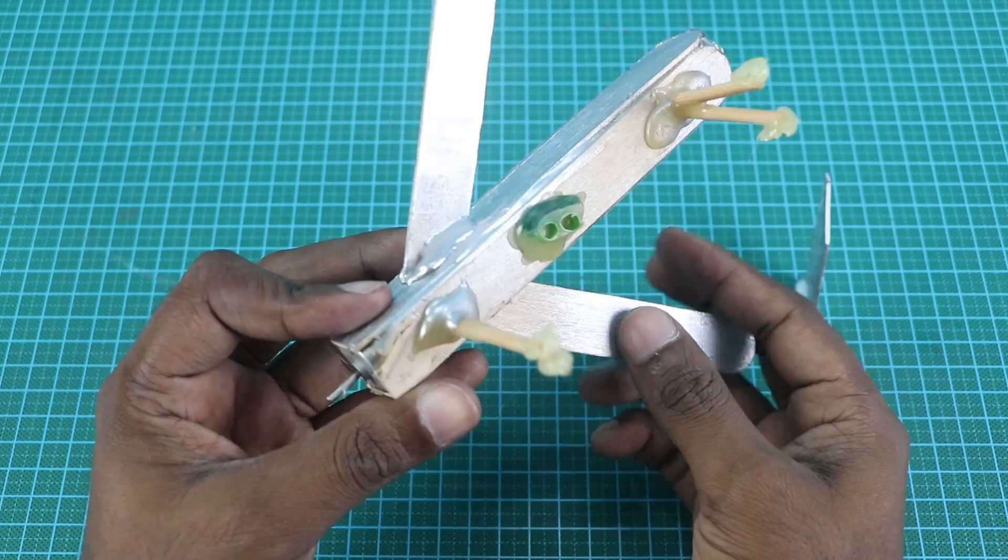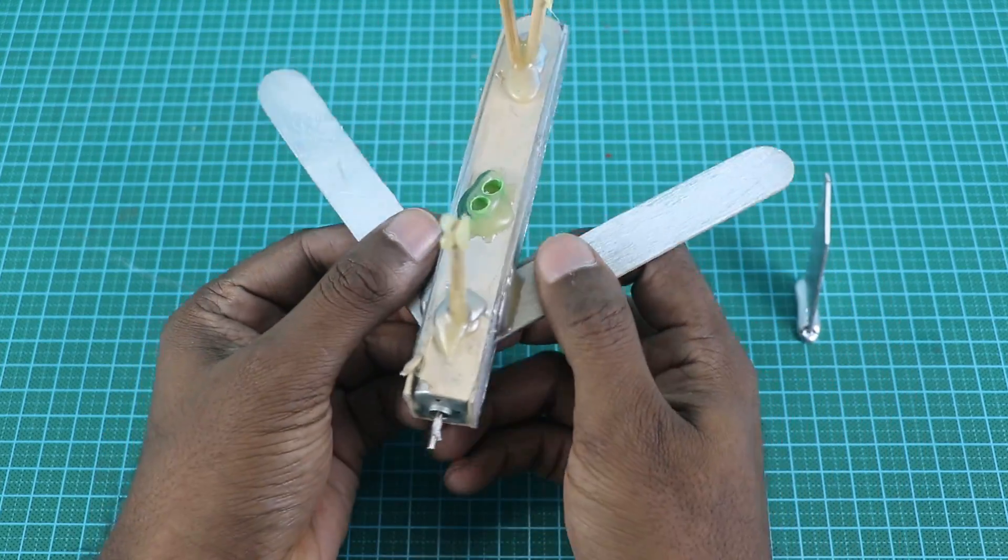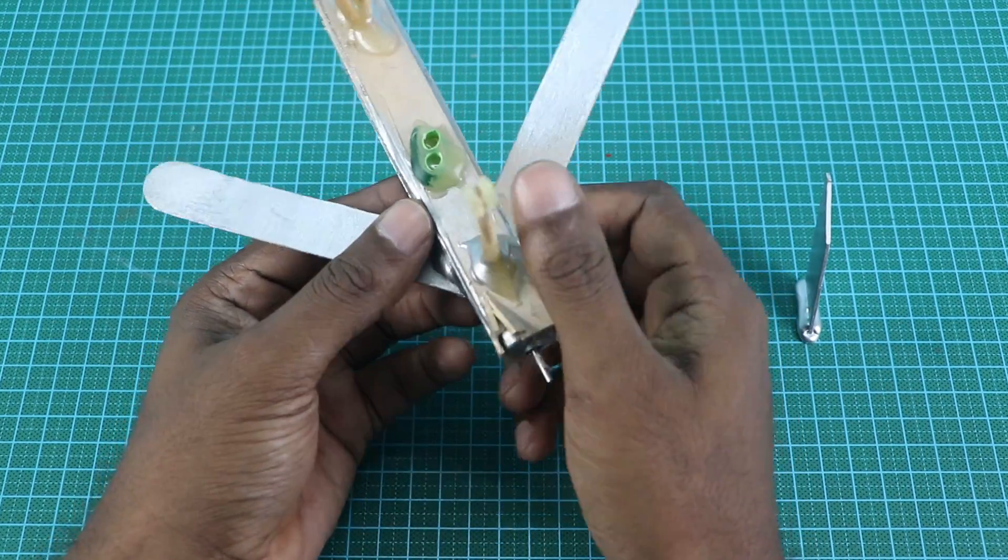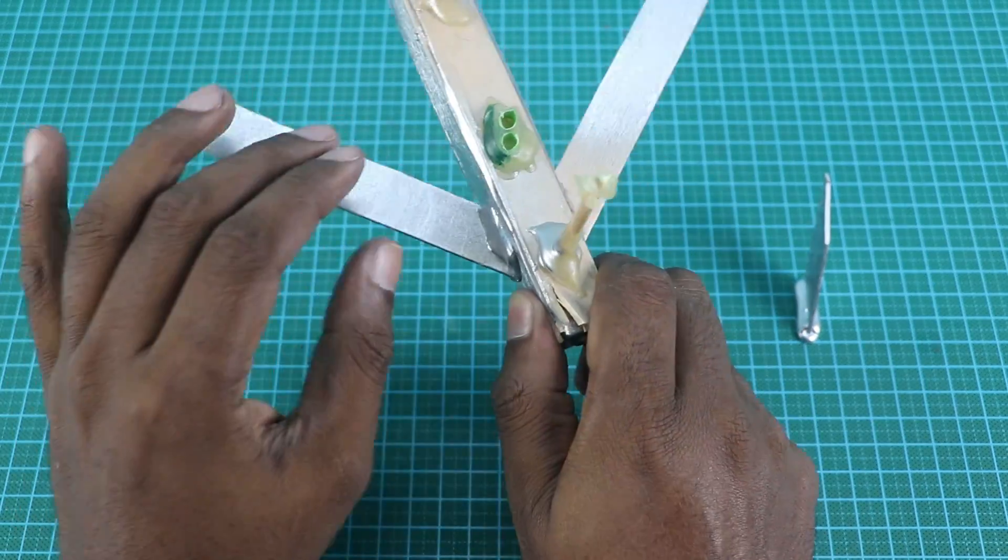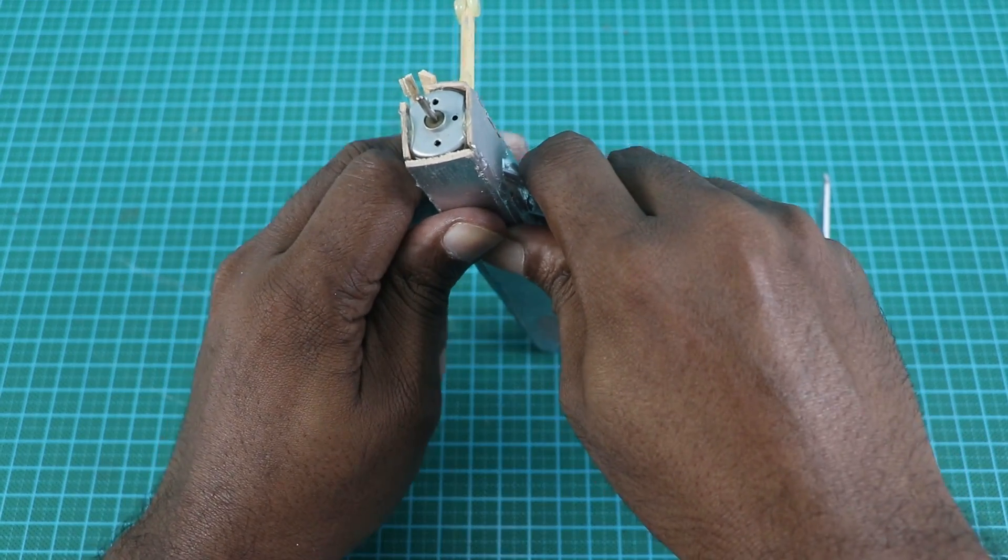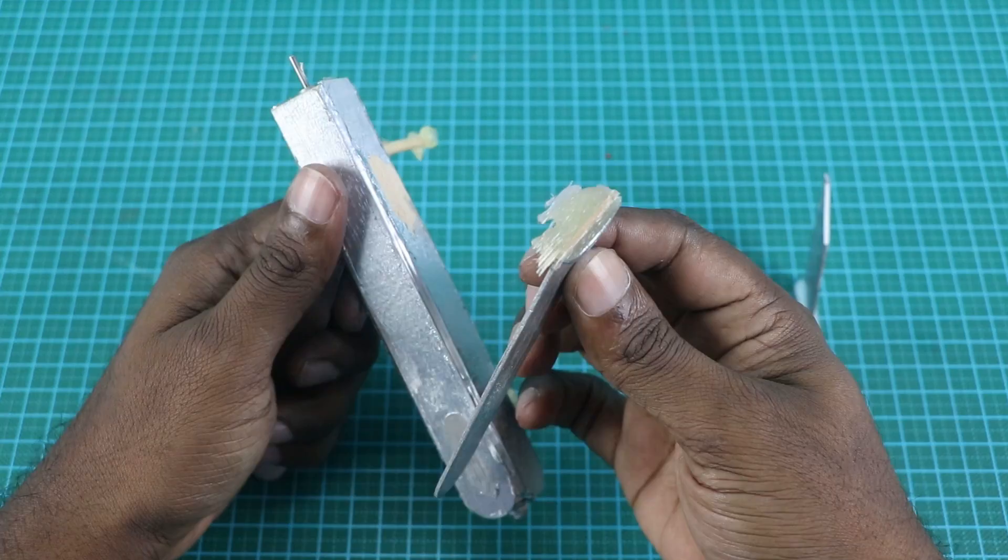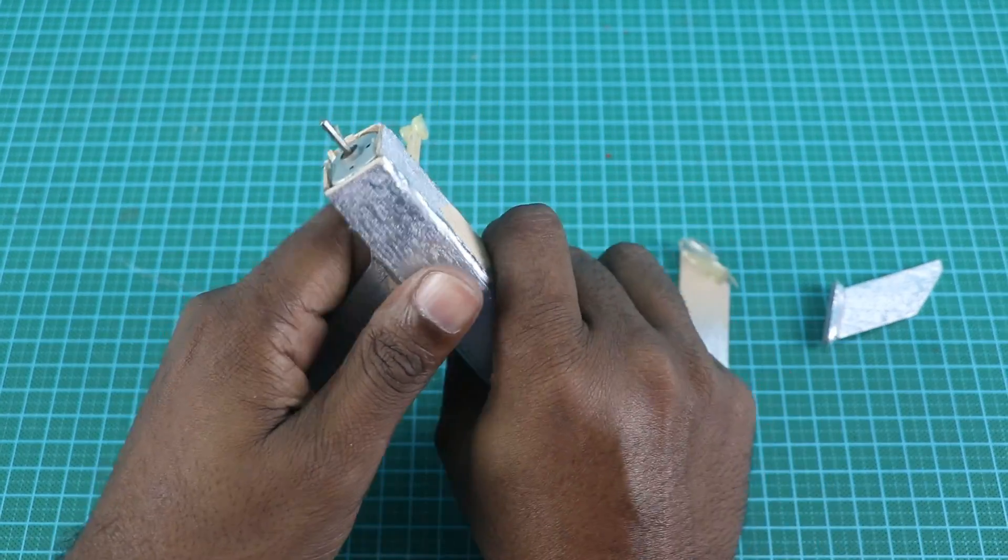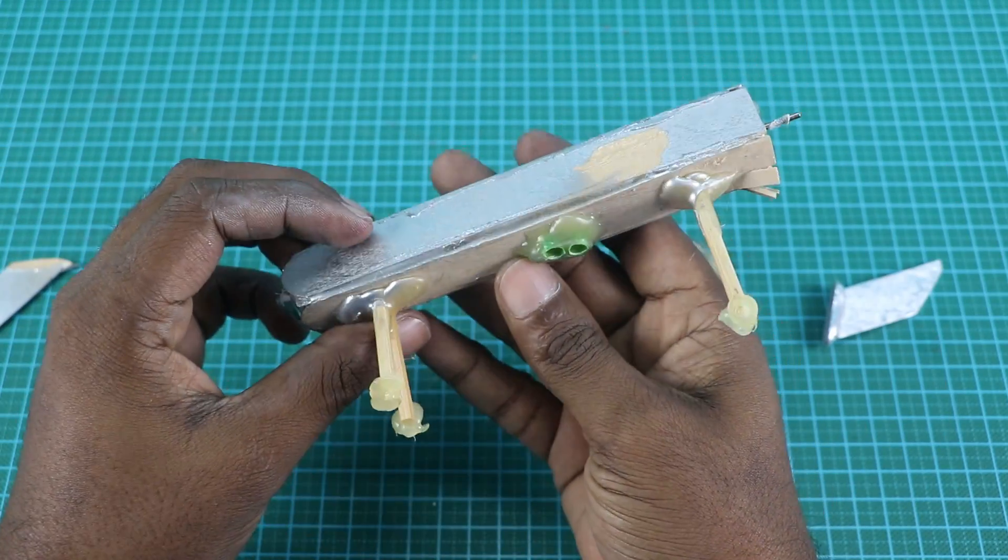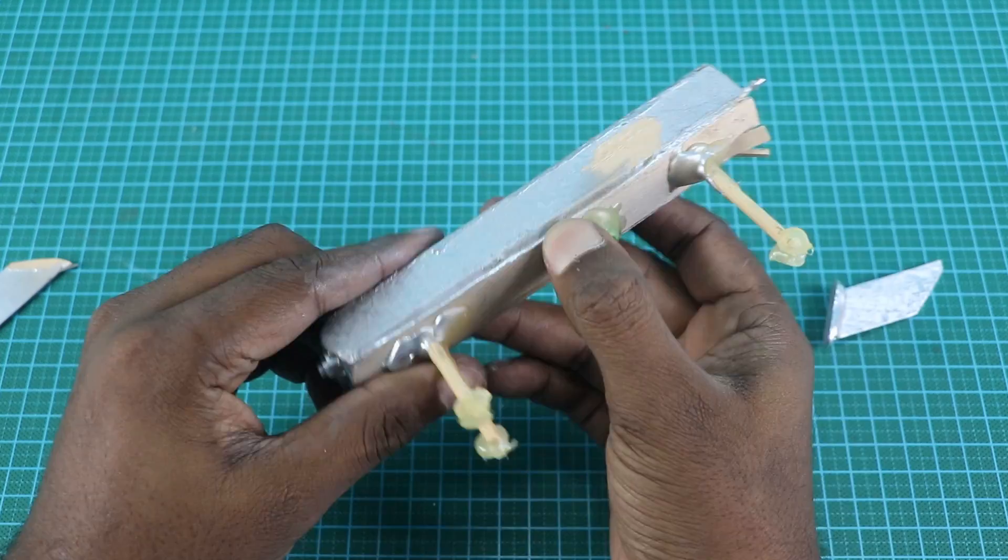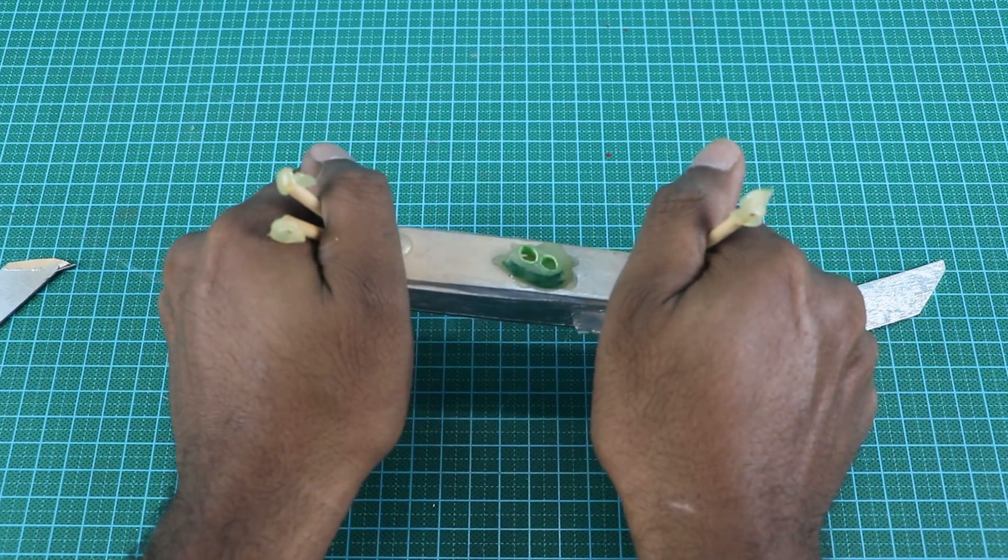So I think it will be easier for me to rip the wings apart. So you see it's very hard. Yeah, finally came off, this one too.